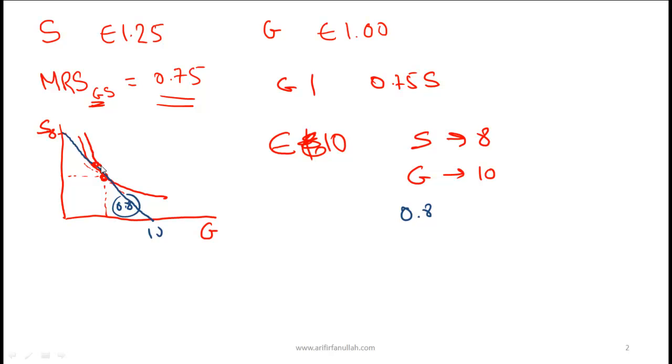So this new indifference curve which is higher and hence would make the consumer happier is above the original indifference curve. And to get to that such that this indifference curve is tangent to the budget constraint, he needs to move from say point A, which was the original point, to this point B.